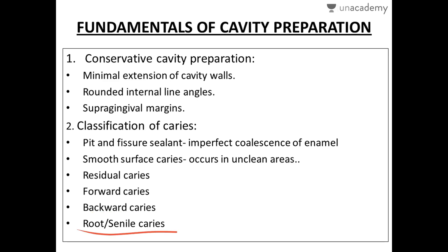Root caries, also called senile caries, is seen in geriatric patients where gingival recession has occurred. Due to gingival recession and the lower resistance of cementum, the caries process can occur here. Root or senile caries is the most rapid form of caries — it spreads rapidly and creates defects in the tooth.